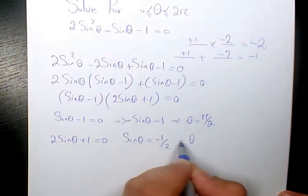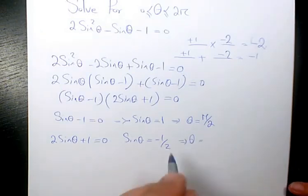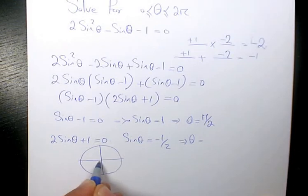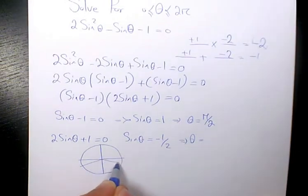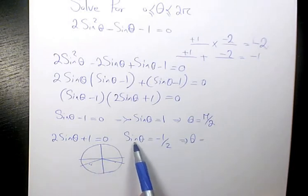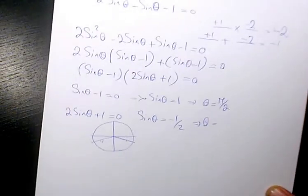So it's going to be theta equals to a number in quadrant 3 and also quadrant 4. Based on the CAST rule, it must be in quadrant 3 and also quadrant 4, so two answers I have. If sine theta equals positive 1/2, the theta will be pi over 6.